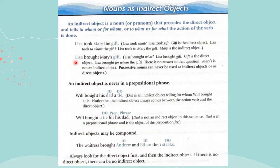Let's look at this example: Lisa brought Mary's gift. Lisa brought what? Lisa brought the gift — so gift is the direct object. Lisa brought the gift for whom? There's no answer to that question in this sentence. Mary's is not an indirect object. Possessive nouns can never be used as indirect objects or as direct objects, because possessive nouns stop being nouns and become adjectives. You can't say 'Lisa brought the gift for Mary's' — no, she brought it for Mary. So it cannot be your indirect object. It's a possessive noun; it becomes an adjective describing gift. Whose gift? It's Mary's gift.